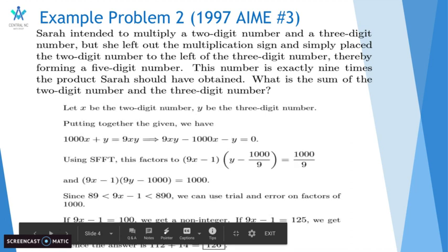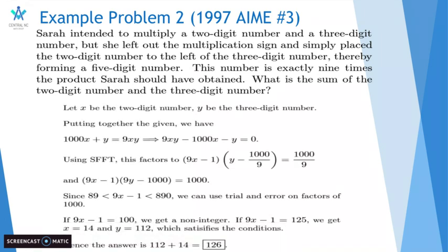So we let x be the 2-digit number, and we let y be the 3-digit number. Putting together the given, we have 1000x plus y equals 9xy. Because the 2-digit number x becomes 1000 when putting it to the left of the 3-digit number, and the 3-digit number stays the same, which is equal to 9 times the product of the original two numbers.